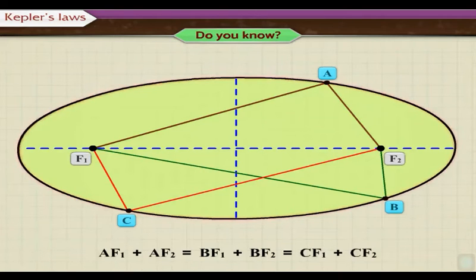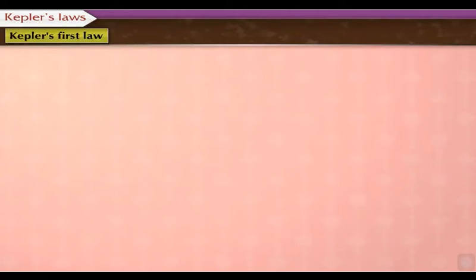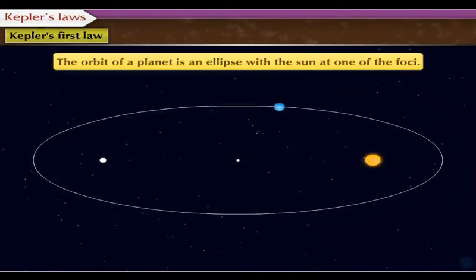After learning what is an ellipse, let us now study Kepler's first law. Kepler's first law: The orbit of a planet is an ellipse with the sun at one of the foci.